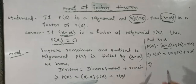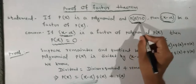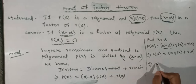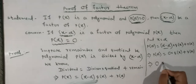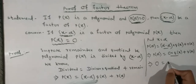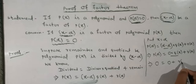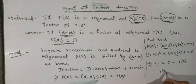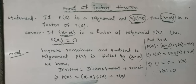It is given that p(alpha) equals 0, so we write 0. And 0 into q(alpha) equals 0, plus remainder rx. Hence rx equals 0. So the remainder becomes 0.